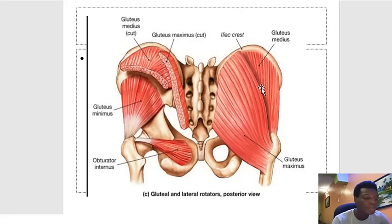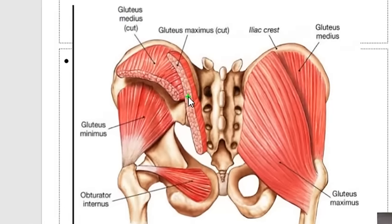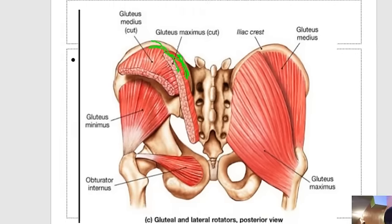Gluteus medius takes its origin from the iliac crest, and gluteus maximus also takes its origin from the iliac crest. Those are examples of muscles taking origin or inserting on the iliac crest.